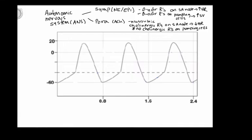The cells of the SA node have beta-adrenergic receptors, and when epinephrine and norepinephrine bind with those, we see an increase in heart rate. The pumping cells also have beta-adrenergic receptors, and when epinephrine and norepinephrine bind with those receptors on pumping cells, we see an increase in stroke volume. The parasympathetic branch effects are only on the SA node cells.